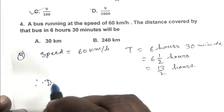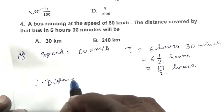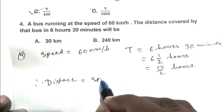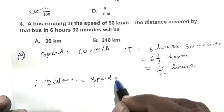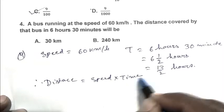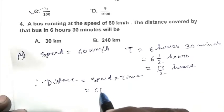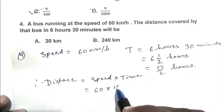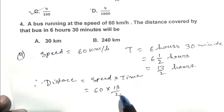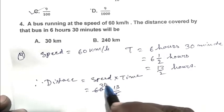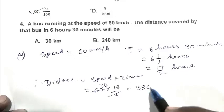Distance equals speed multiplied by time, so 60 multiplied by 13 by 2, which gives 30 multiplied by 13, that is 390 km.